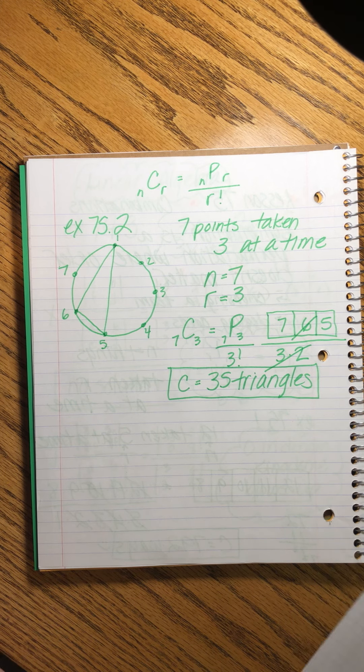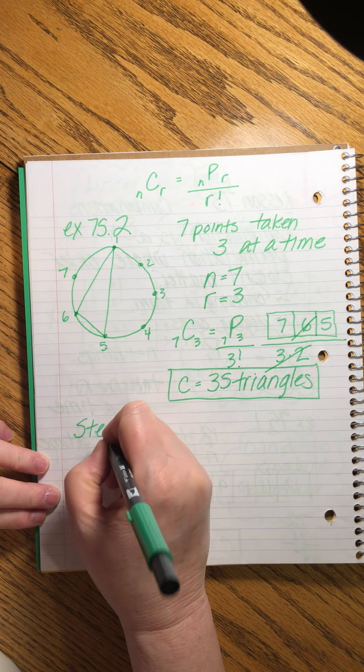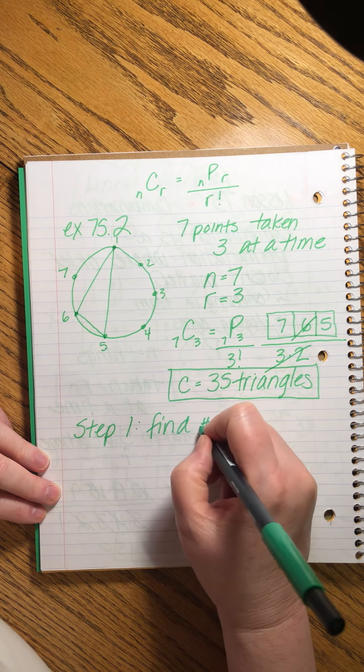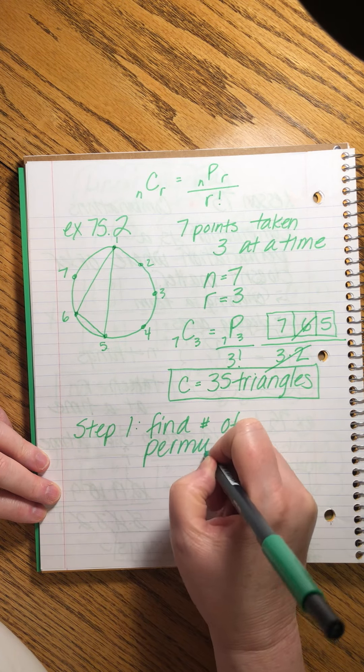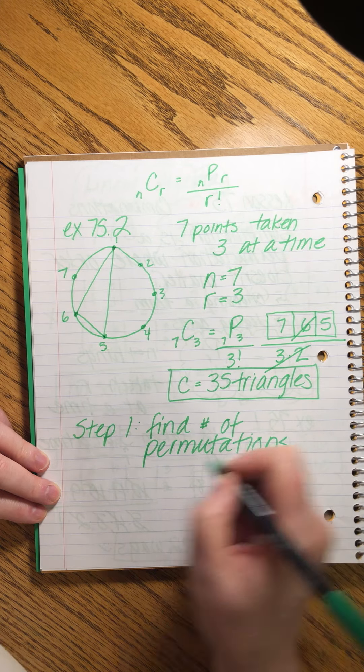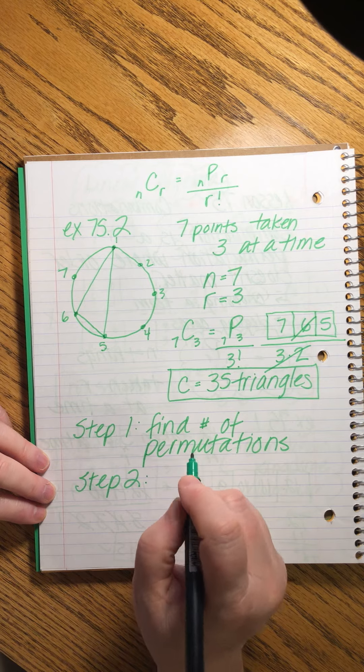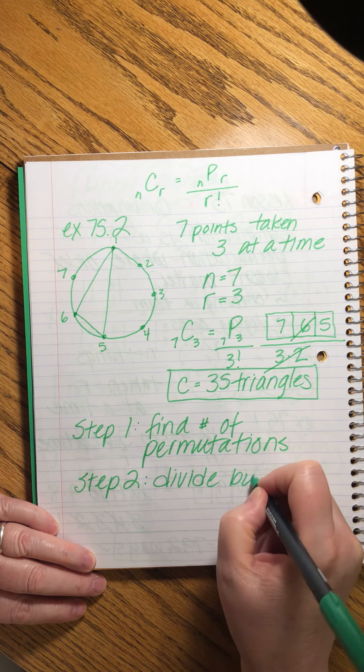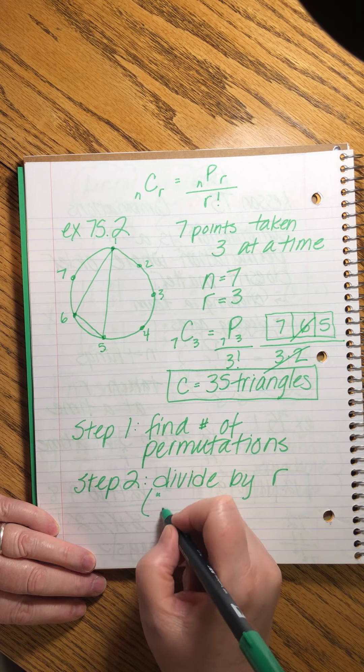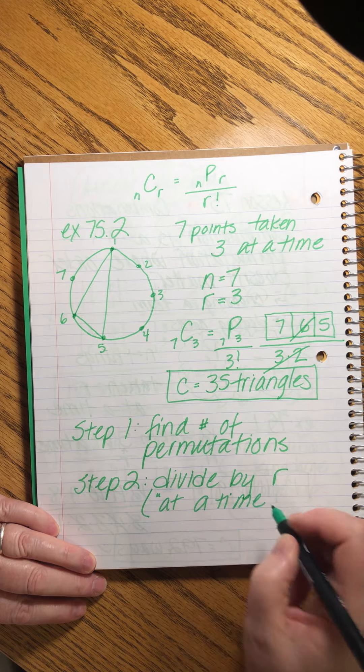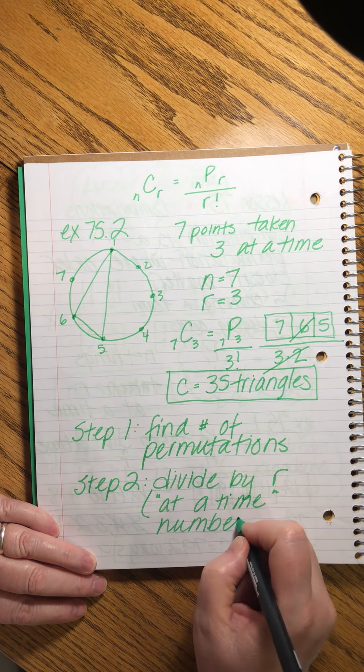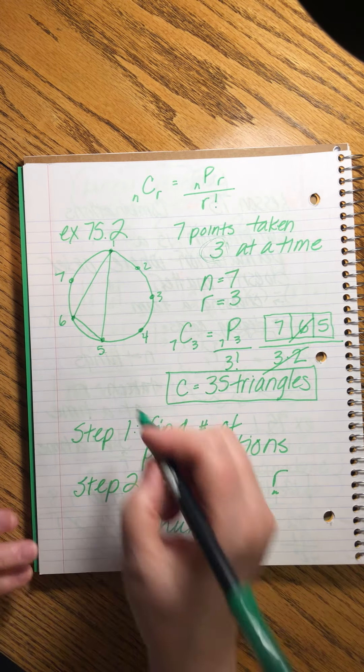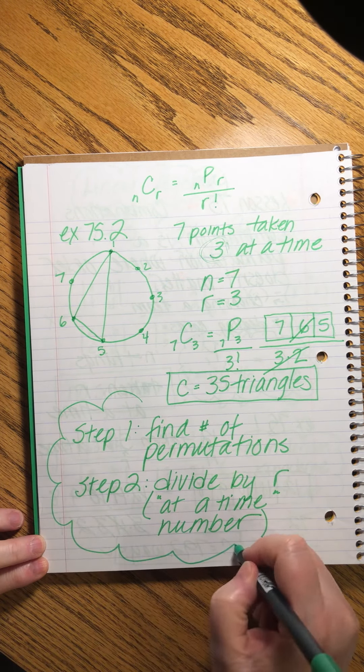I didn't write this down, but let me write this. For step one, we find the number of permutations. And for step two, we divide by r factorial, which is the at a time number. Seven points taken three at a time. That is our r number. So if you want to break it down into a couple of steps, there they are.